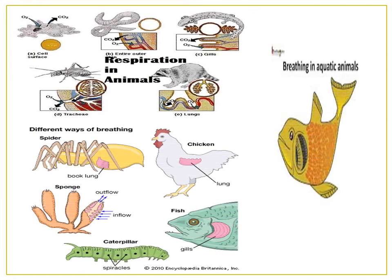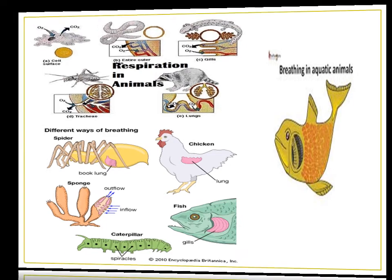Now we will see in the diagram the breathing system in fishes — aquatic animals use gills. Earthworms and other organisms breathe through their skin. We see in the pictures so many examples to understand what the respiratory organs are and how different animals breathe.